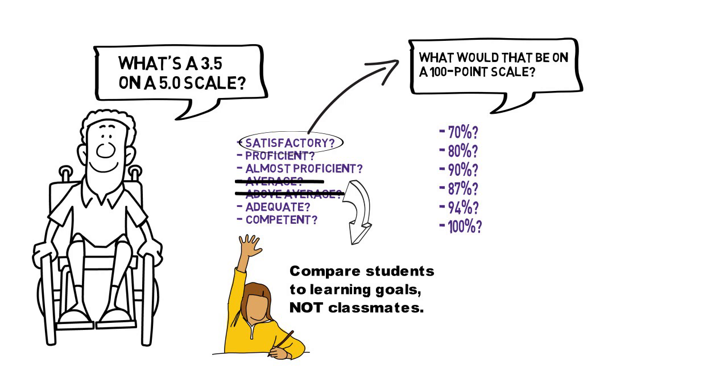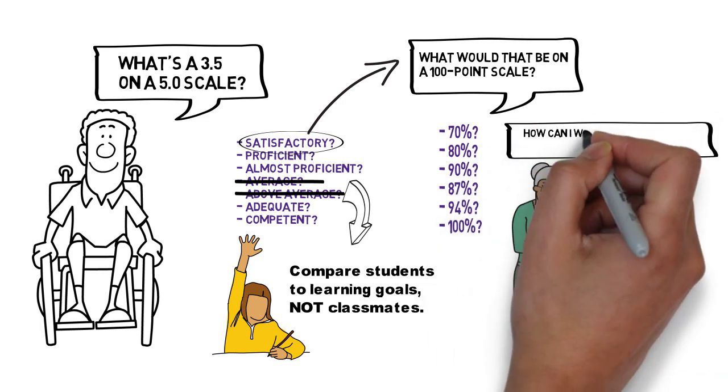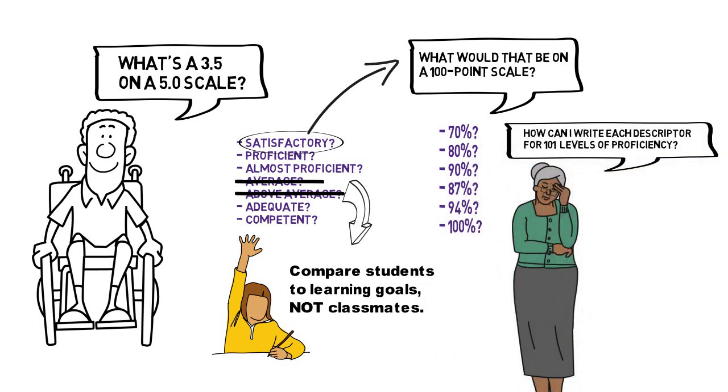And what if we tried to rubricize the 100-point scale with specific evidence descriptors for each level? Imagine trying to write out all those descriptors for each of 101 levels, 100 down to zero, finding just the right words that mean slightly less than the word in the descriptor above it. We'd run out of words after four or five levels.